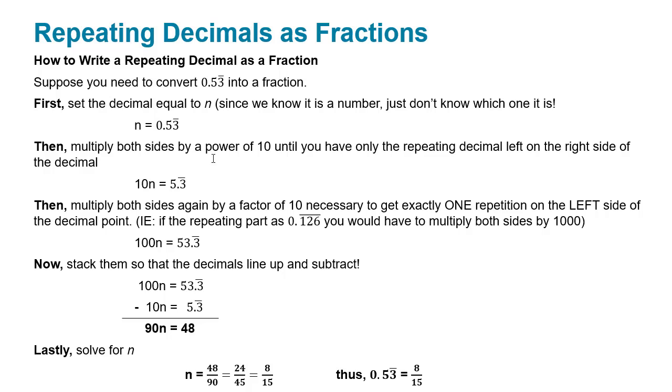Now, once you've done that, the next step is you repeat the process as far as you're going to multiply both sides by a power of 10. But this time, the power of 10 that you use is dictated by how big the pattern is, because now you want exactly one of the repeating powers or repeating decimal to be on the left-hand side of the decimal point. So in this case, we have a 3 repeating, we have one digit. So we need to multiply by 10 more to get that 3 over there. So now we have 53.3 repeating. So we've got these two equations. We go 10n equals this, 100n equals that.